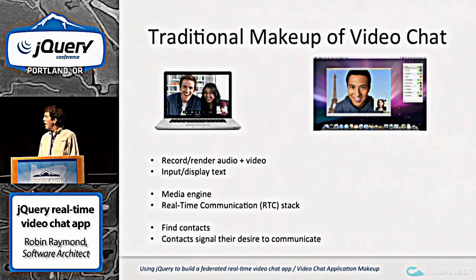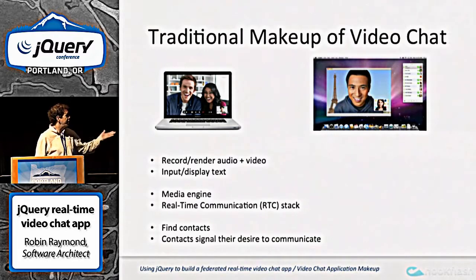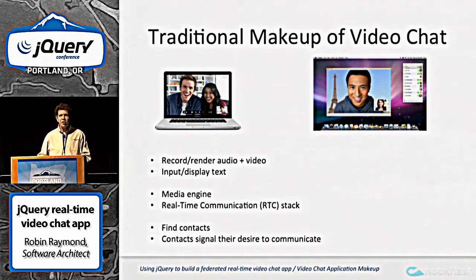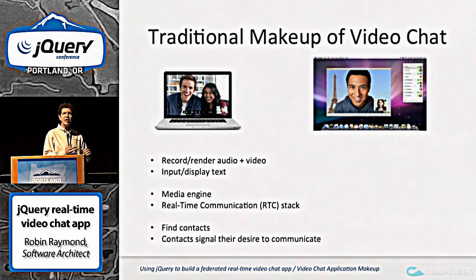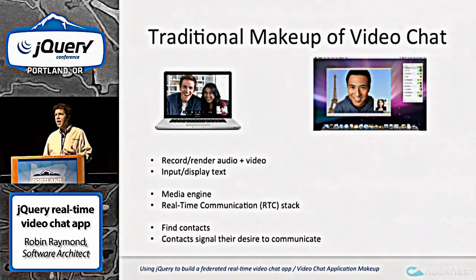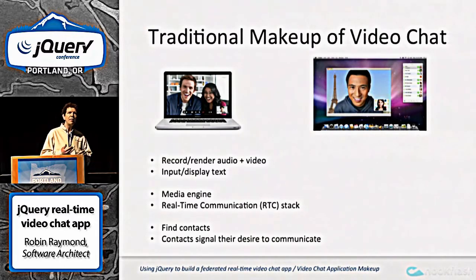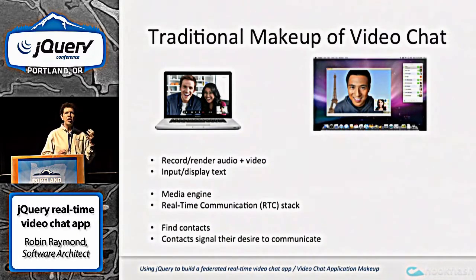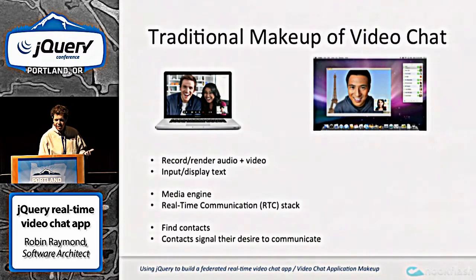Traditionally, a video chat application consists of recording and rendering audio and video. You also have texting involved, so you need a media engine to process all this audio data, and you need a real-time communication stack so you can send the media from one location to the other in real-time. And you need a mechanism to find your contacts and to signal your intention to communicate to a peer.